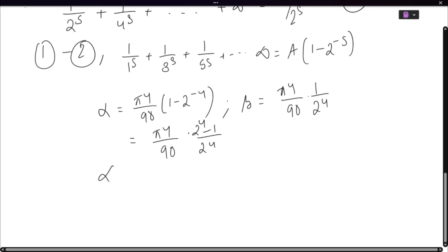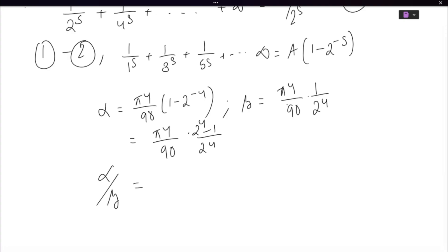Now if I want to find out alpha by beta, that is going to be pi to the power 4 by 90 and pi to the power 4 by 90 cancel. Similarly, 2 to the power 4 would cancel off and you would be left with 2 to the power 4 minus 1 which equals 15.